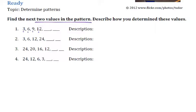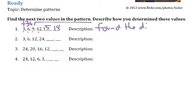First I want to start by adding. 3 to 6, I can add 3 to get that to work. 6 to 9, am I still adding 3? Yeah. 9 to 12, still adding 3. So 12 plus 3 would be 15, plus 3 would be 18. For the description, how did I determine these? I basically found the difference and added.